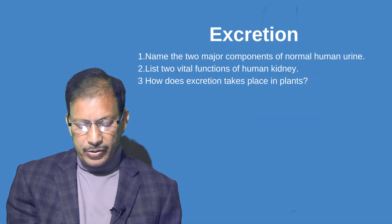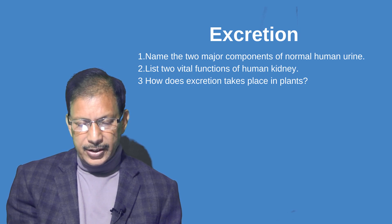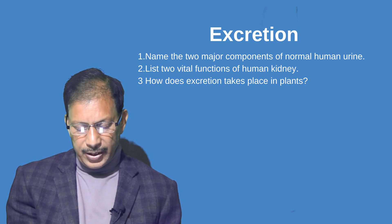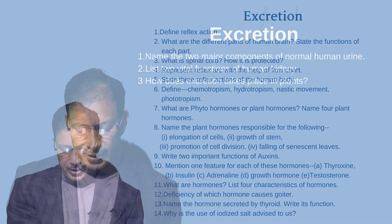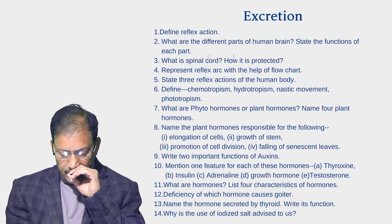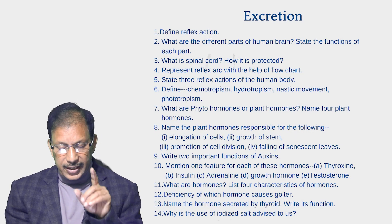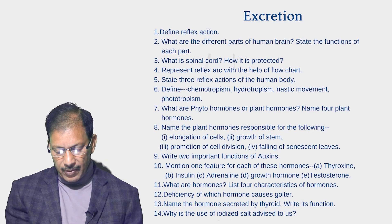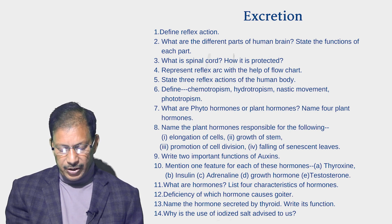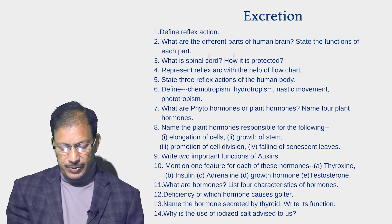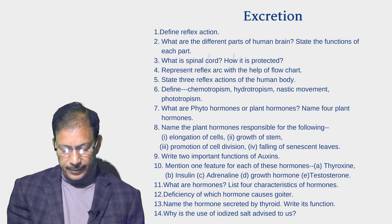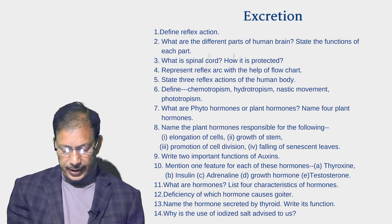Enumerate any five functions of blood. Next, Chapter Excretion: Name two major components of normal human urine. List at least two vital functions of the human kidney. How does excretion take place in plants? Then Control and Coordination: Define reflex action. What are the different parts of the human brain — state the function of each part. What is the spinal cord and how is it protected?